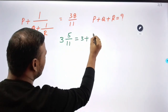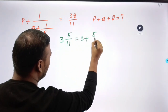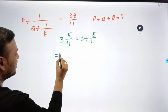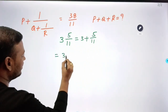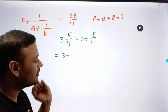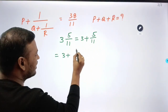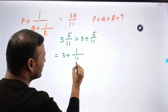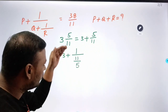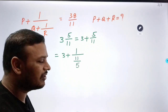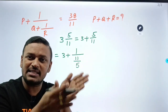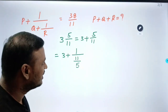3 plus 5 by 11. 5 times 3 is 15, 5 by 11.